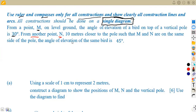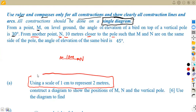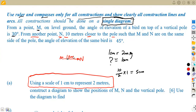There is another point N, 10 meters closer to the pole. So N is between M and the pole, and the distance MN is 10 meters. Using the scale where 1 centimeter represents 2 meters, 10 meters is represented by 10 divided by 2, which equals 5 centimeters.